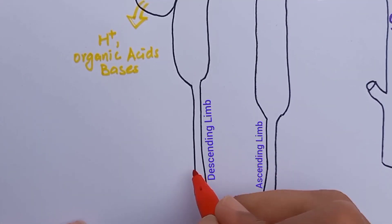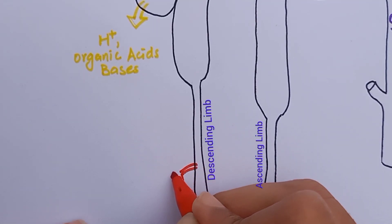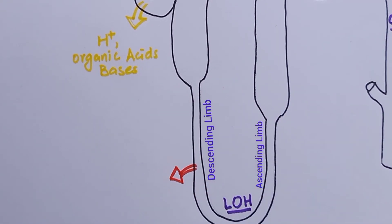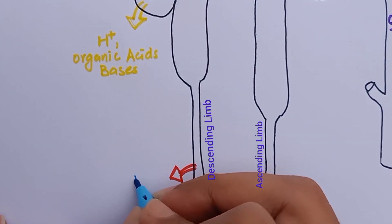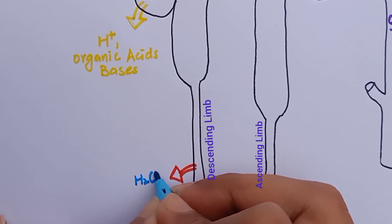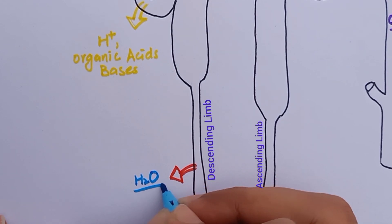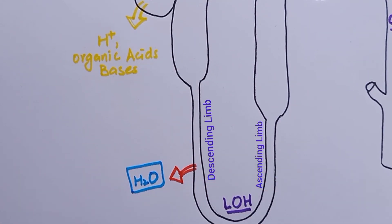In the descending limb of the loop of Henle, there is reabsorption of water by passive diffusion due to medullary hypertonicity. This segment is also called the concentrating segment of the tubule, and it is impermeable to sodium.